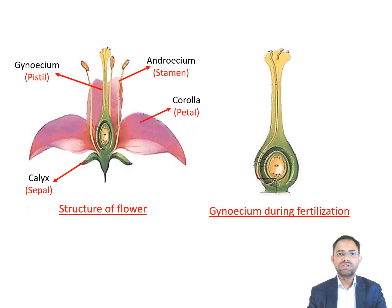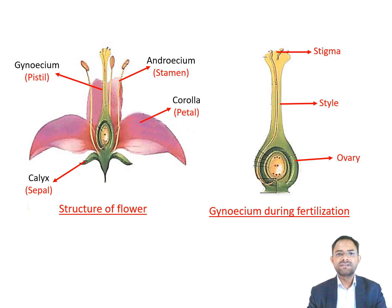The topmost flat portion of the pistil is called stigma. Stigma serves as the landing platform for pollen grains, and the elongated slender part of the pistil is called style. The basal swollen part of the pistil is called ovary. Inside the ovary, one or more small ovules are produced.